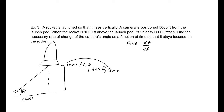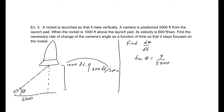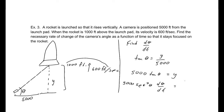A way to relate this is using tangent: tangent theta equals opposite over adjacent, which is y over 5,000. In general, the height is y, so 5,000 times tangent theta equals y. Taking the derivative: 5,000 secant squared theta times d theta/dt equals dy/dt.